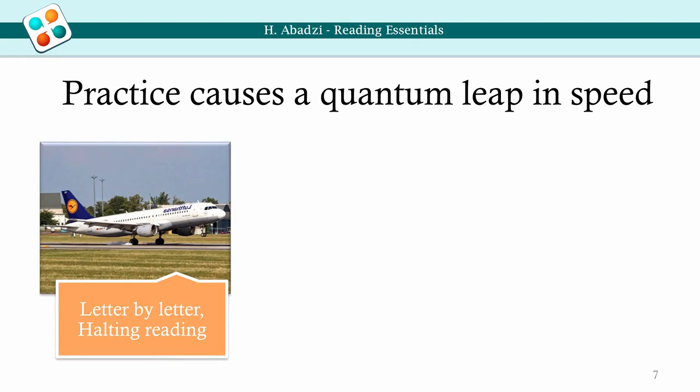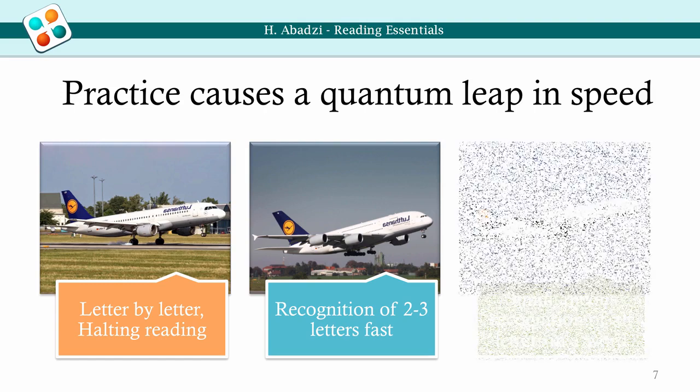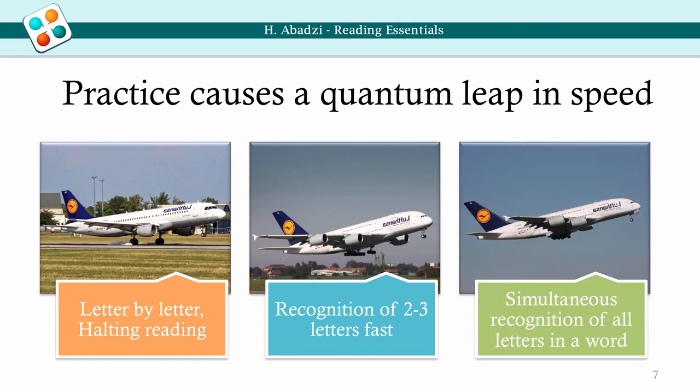While the airplane is on the ground, we decode text laboriously, letter-by-letter. When the visual word form area is sufficiently activated, reading speed rises abruptly, like an airplane taking off. But by the time the airplane reaches cruising altitude, we recognize words as if they were faces.